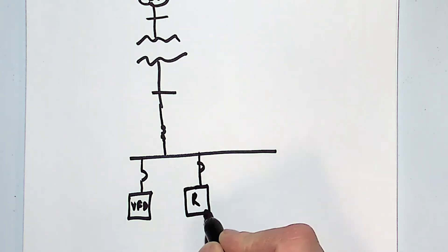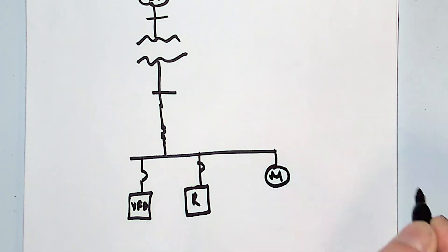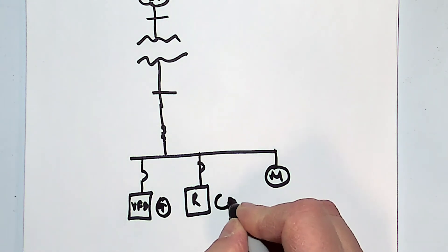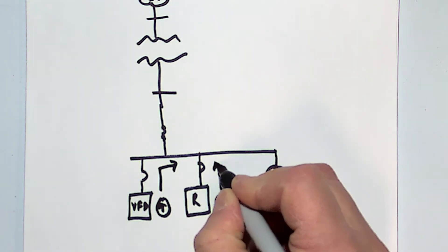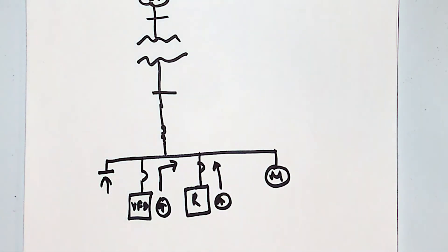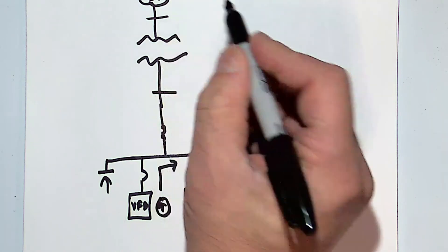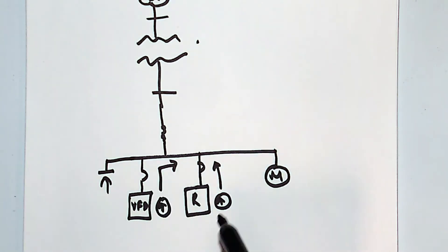As we model those throughout the system — and maybe we also have some linear loads like motors — we're going to identify these harmonic sources and create what we call constant current sources and push that current back out on the system. And if we have capacitors on the system, we're going to model those capacitors and see how they interact with harmonic loads. Mostly what we're doing is creating an impedance model — there's a resistance and reactance with the utility, with the transformer, with the cable, with the busway, with the cables.